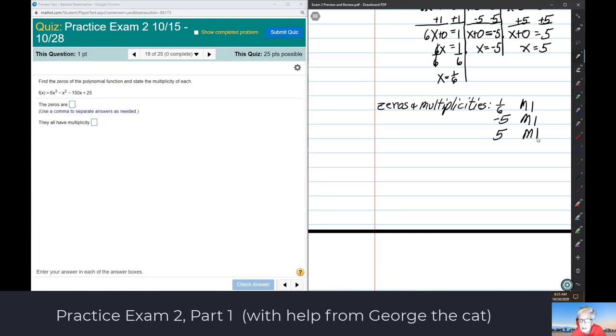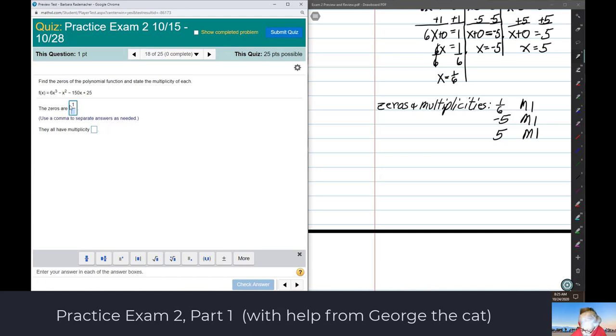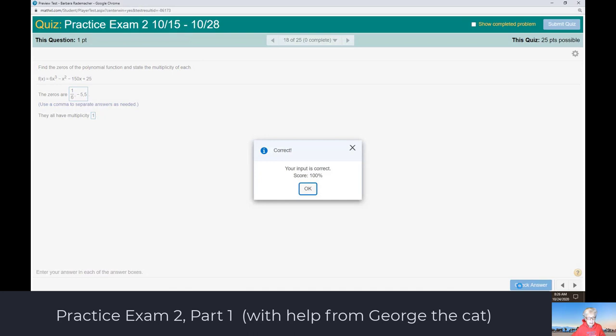So the zeros are 1 sixth and negative 5 and 5. And each one occurs once. So the multiplicity of each is 1. When we fit the answer in the computer, is it going to want me to put it in order like negative 5, 1, 6 and then 5? Yep. If it says so. Check answer. Yeah, it accepts it. This is a practice exam, which means it's the quiz. I'm surprised it would tell me. It used to not tell you. Maybe because I'm the teacher.